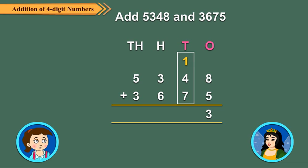Adding the tens. 1 ten carried plus 4 tens plus 7 tens is equal to 12 tens, which is 1 hundred plus 2 tens. Carry over 1 to the hundreds column and write 2 under the tens column.